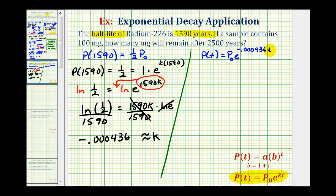And now we can determine if we have 100 milligrams, how many milligrams remain after 2,500 years. Where P₀ will be 100 and t is equal to 2,500. So we have 100 times e raised to the power of -0.000436 times 2,500.